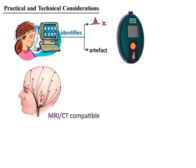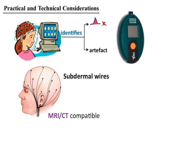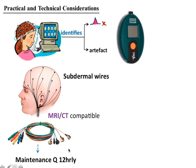Subdermal wires can be used to prevent lead displacement from skin contact, reducing erroneous measurements, and leads should be maintained every 12 hours by the EEG technician. A full continuous EEG requires 16 electrodes with two reference electrodes using a 10-20 monitoring system. A US study showed that reducing the montage — fewer electrodes — can result in missing 28 percent of underlying NCS or NCSE.